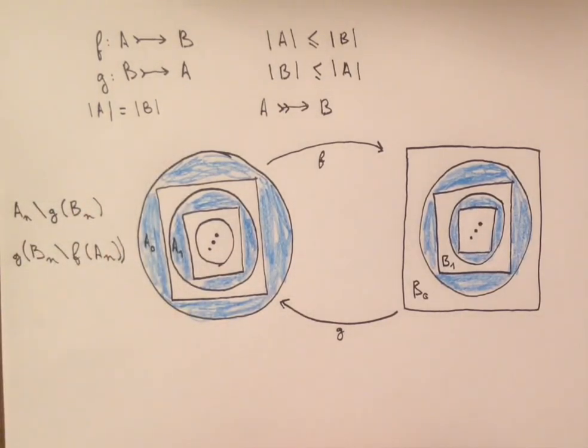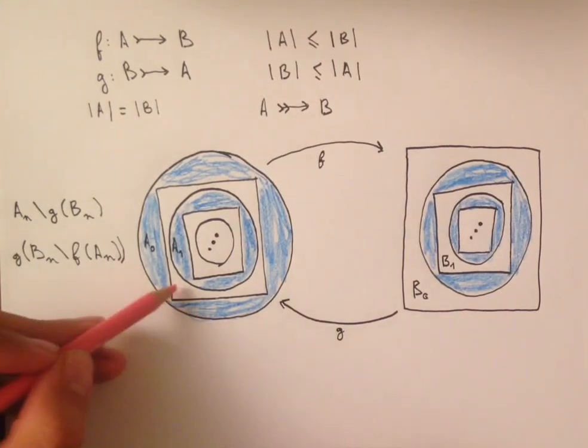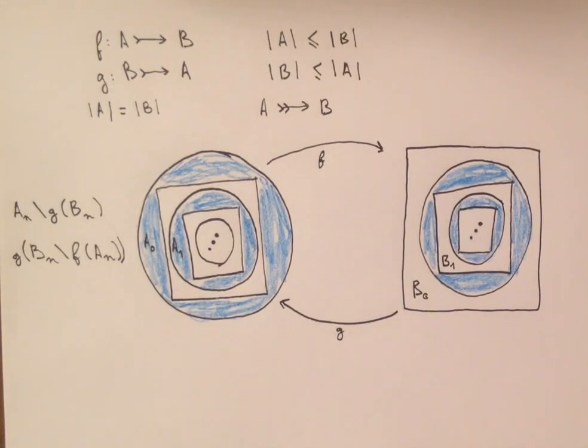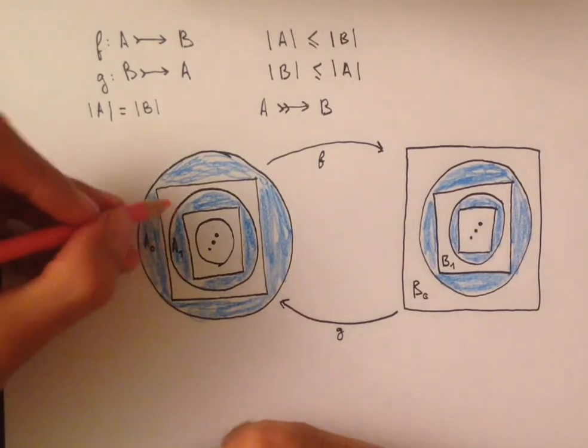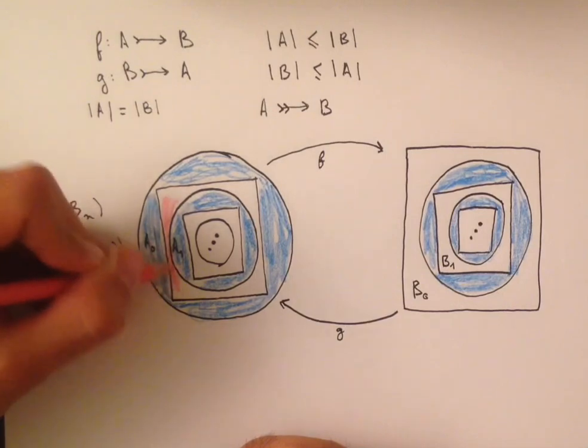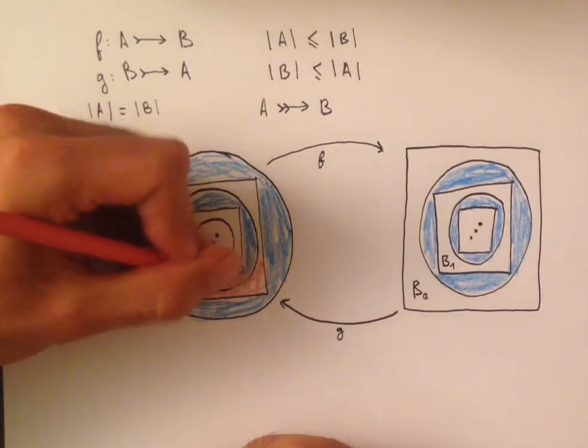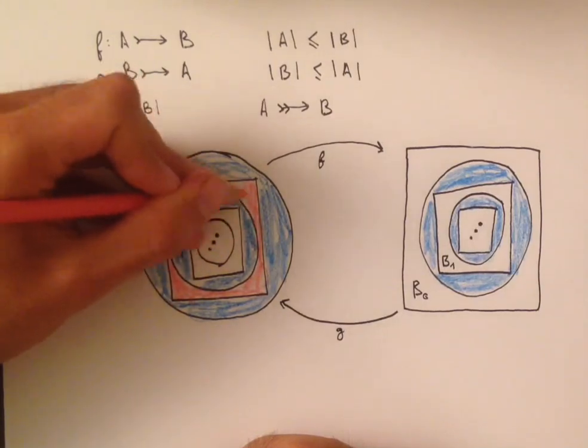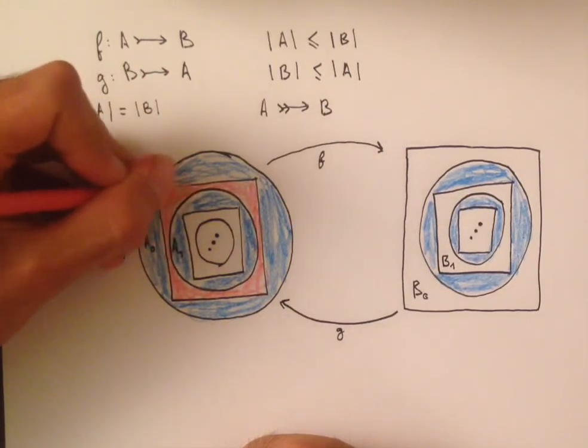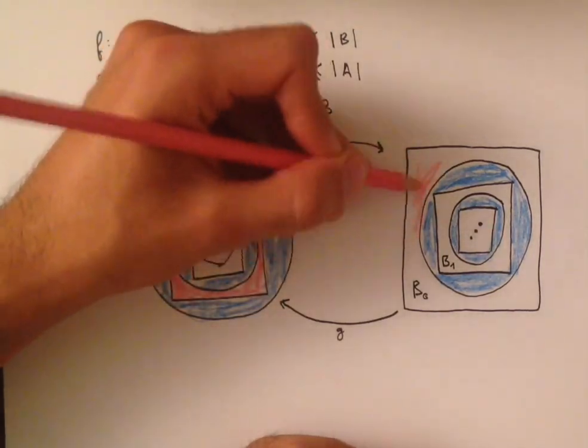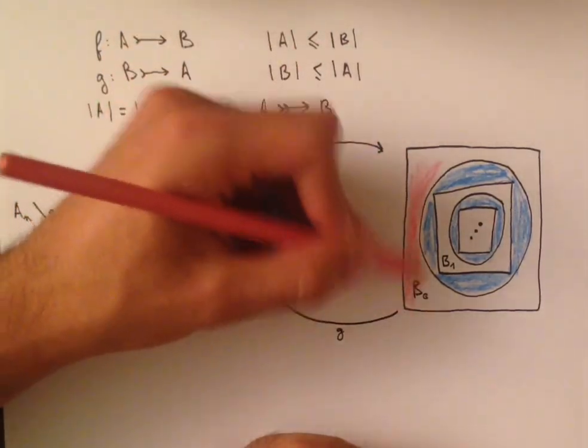And in the case of this one right here, we have N equals zero. And so this region is going to map injectively onto, well, it's pretty obvious what part it's going to map injectively onto, the one that looks the same and is the outermost. So that's this one right here.